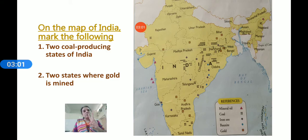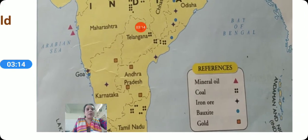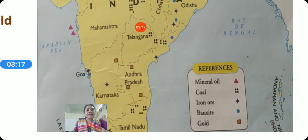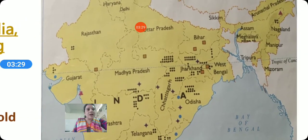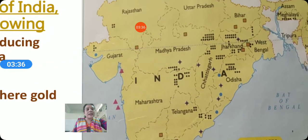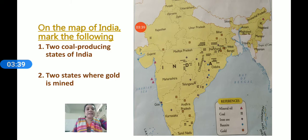Next, you have to mark two states where gold is mined. First, find the gold symbol — it is a red square. Where does it appear? There are two places in Andhra Pradesh, three places in Karnataka, then Rajasthan, Madhya Pradesh, Bihar, West Bengal, and Jharkhand. These are all the places where gold is mined. You have to mark it in two states.